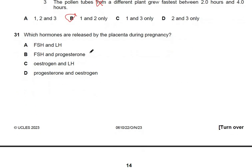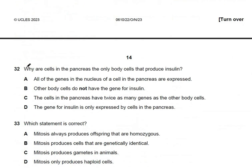Question 31: which hormones are released by the placenta during pregnancy? The placenta releases progesterone and estrogen during pregnancy. This is the correct answer.